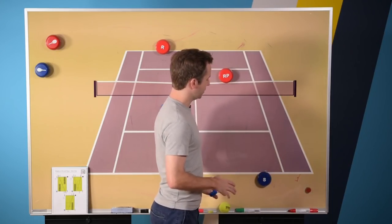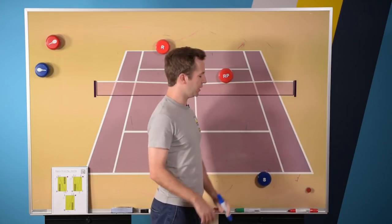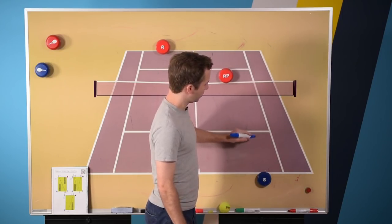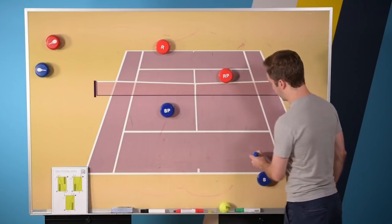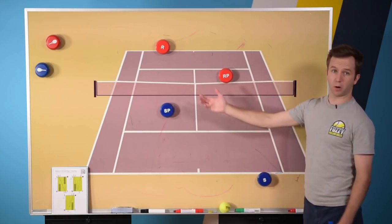Now, the thing you can do that can add a little variety and increase your percentage is if the ball comes to your forehand, you will have pre-decided, well, I'm going to return it cross court.